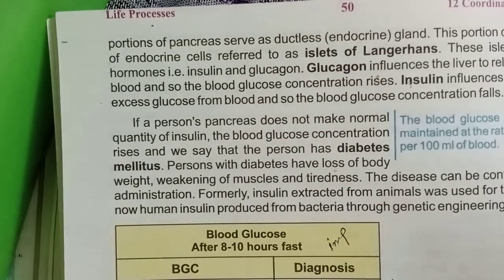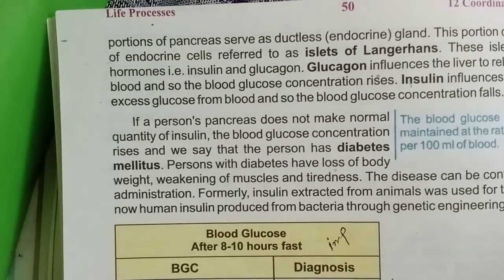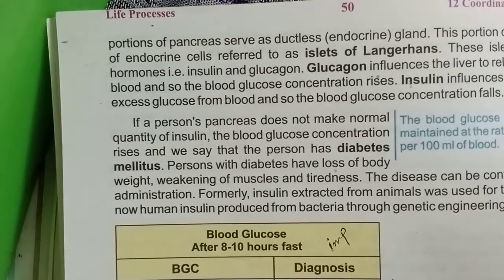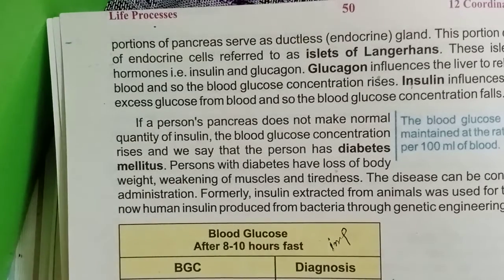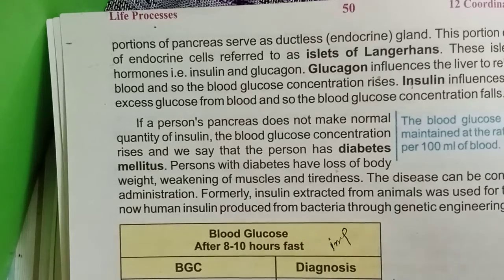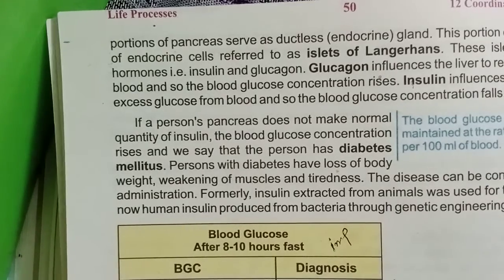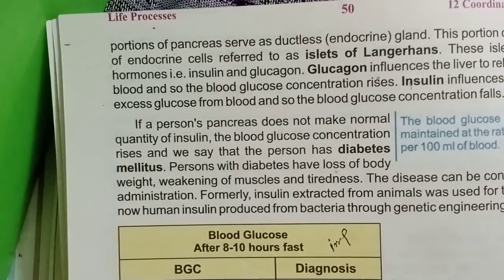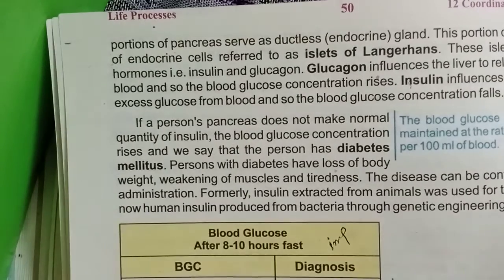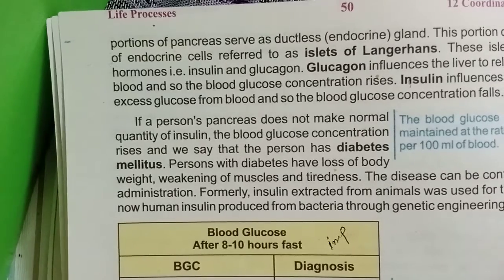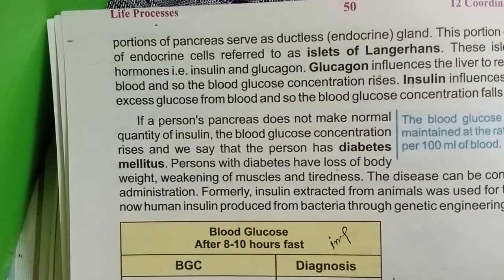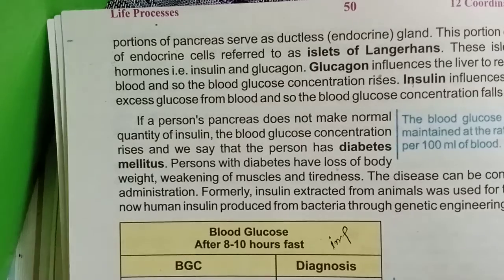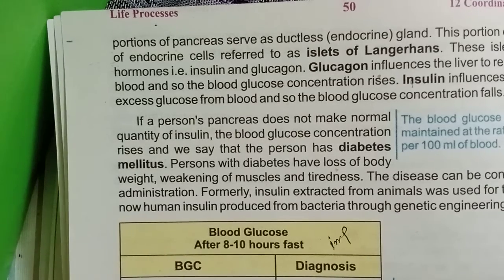If insulin is not produced, what will happen? The glucose concentration will increase, and then we say that this person has diabetes — which we call diabetes mellitus. This is why insulin is critical: without it, a person develops high blood sugar.